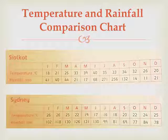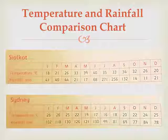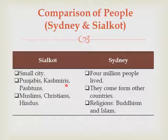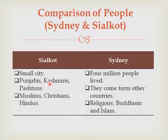Now let's look at the people of Sydney and Sialkot. Although Sialkot is a smaller city than Sydney, about half a million people live there. The population consists mostly of Punjabis, Kashmiris, and Pashtuns.